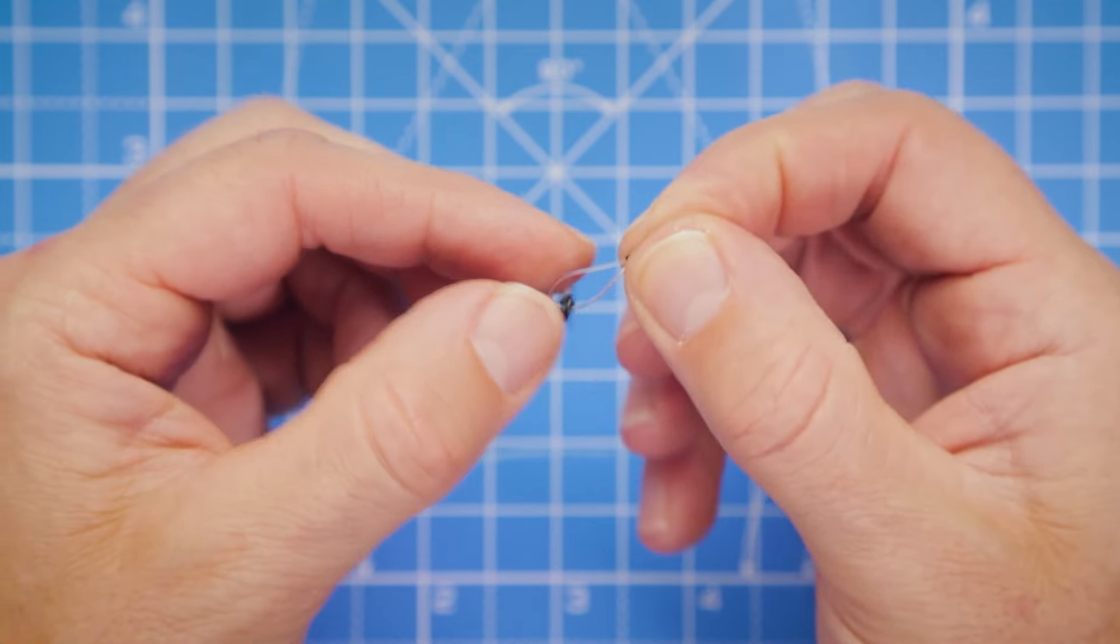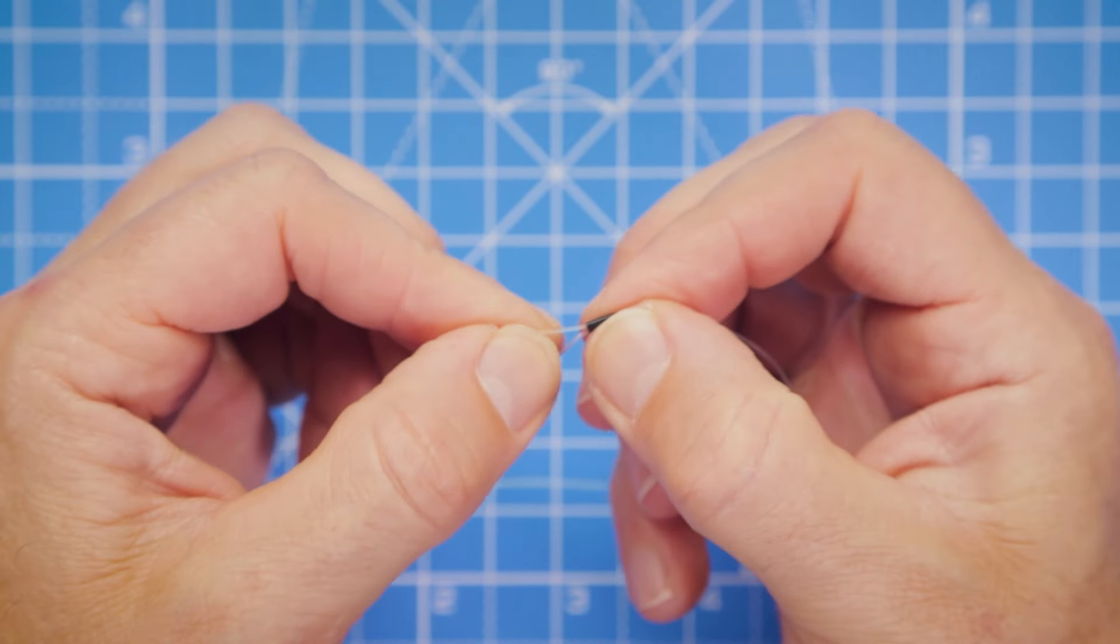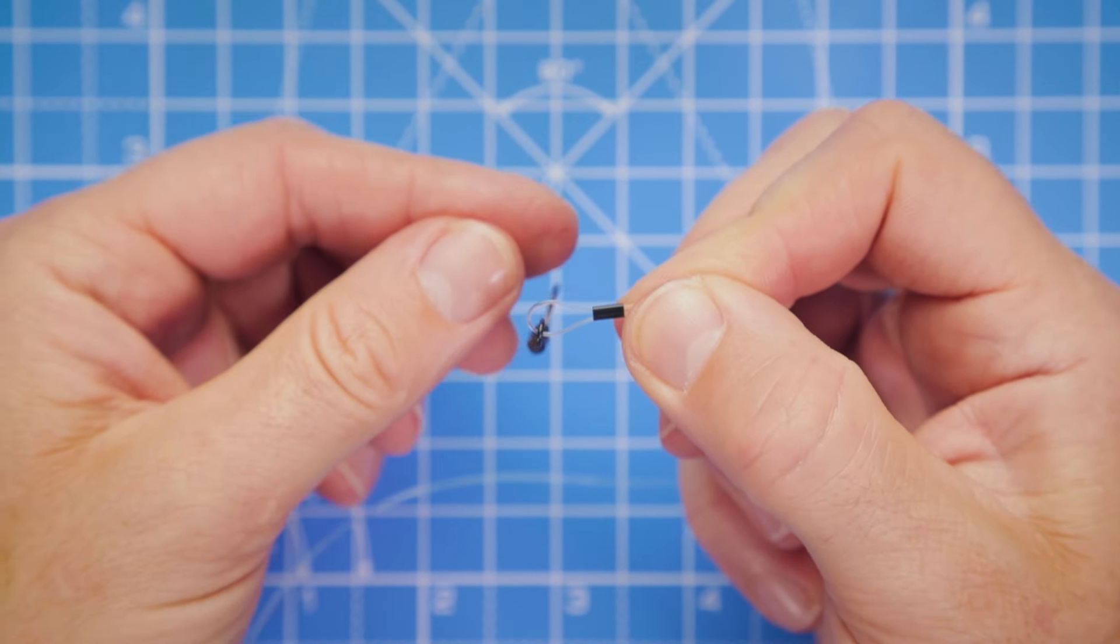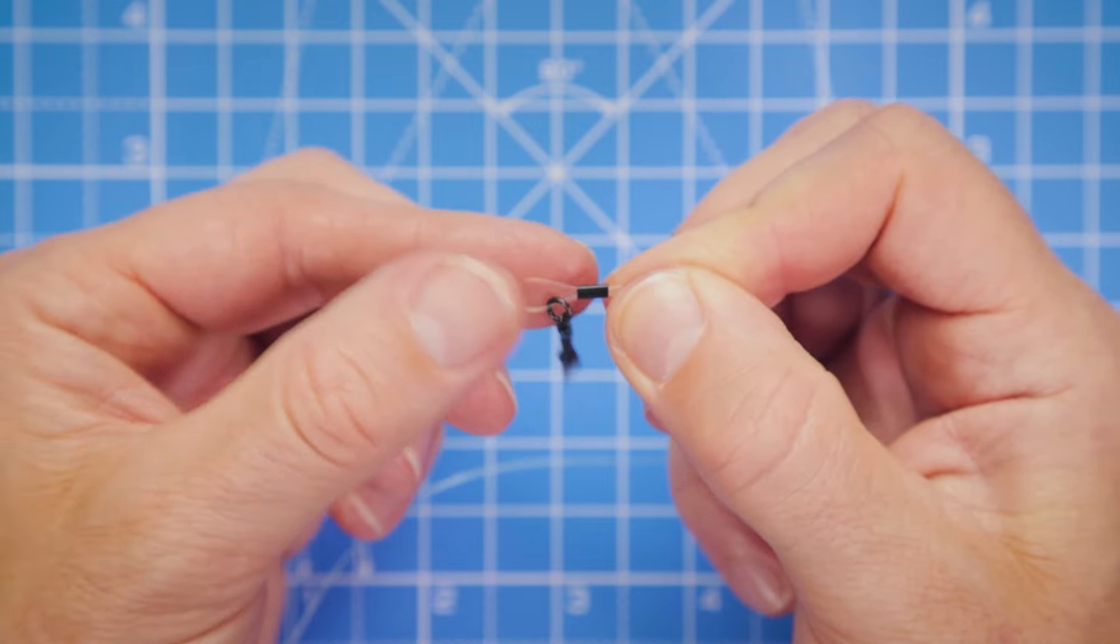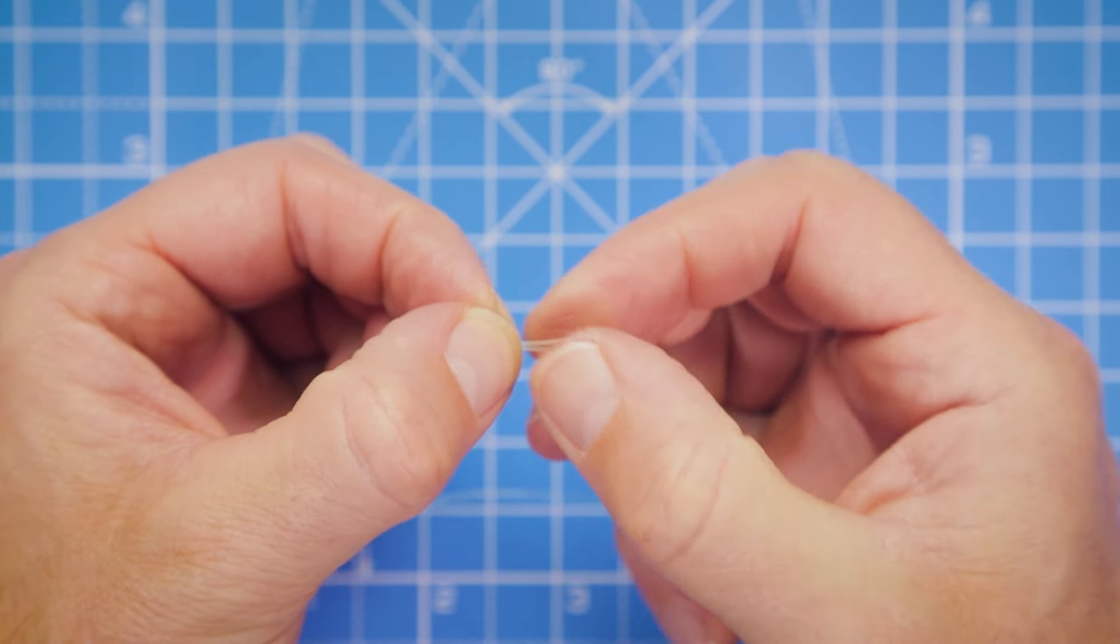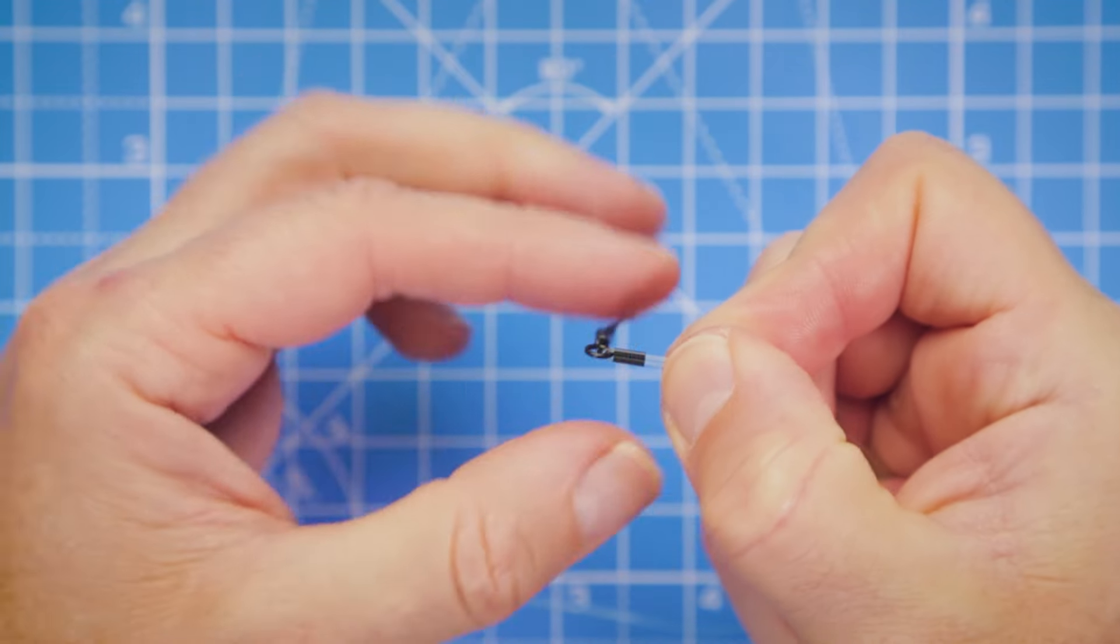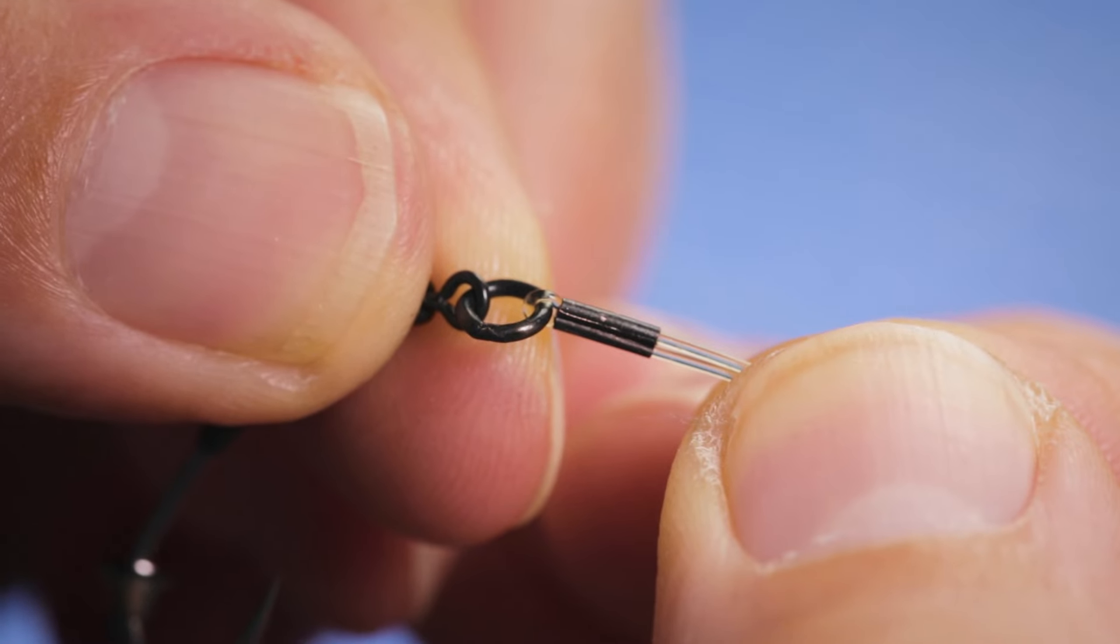Just tease it in. Like I said, there's no rush with creating this rig. Take your time and you'll do it perfectly. Then we're just going to pull the crimp down tight to the swivel. We're not going to leave any loop section there. Now we're ready for the next step.